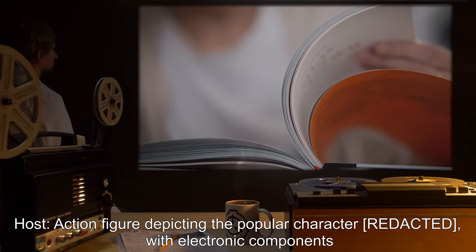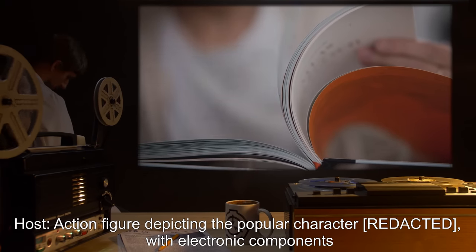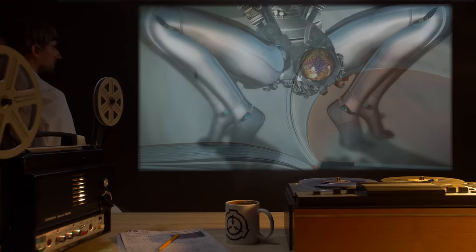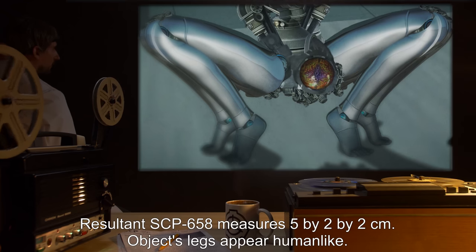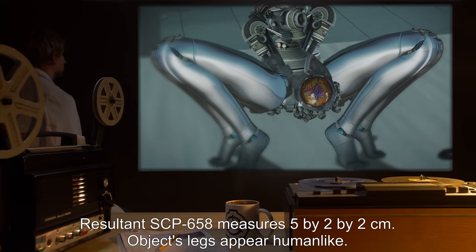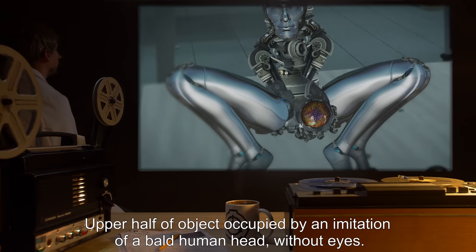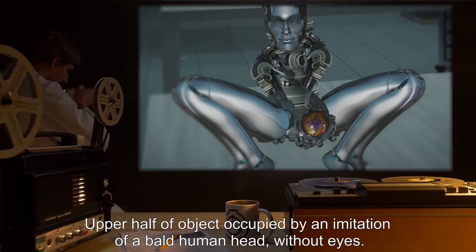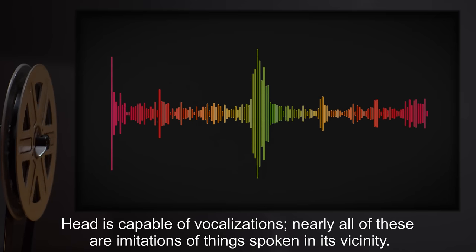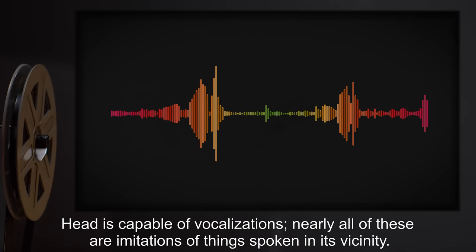Host: Action Figure depicting the popular character with electronic components. Gestation Period: 10 Days. Notes: Resultant SCP-658 measures 5 by 2 by 2 centimeters. Object's legs appear human-like. Upper half of object occupied by an imitation of a bald human head, without eyes. Head is capable of vocalizations. Nearly all of these are imitations of things spoken in its vicinity.